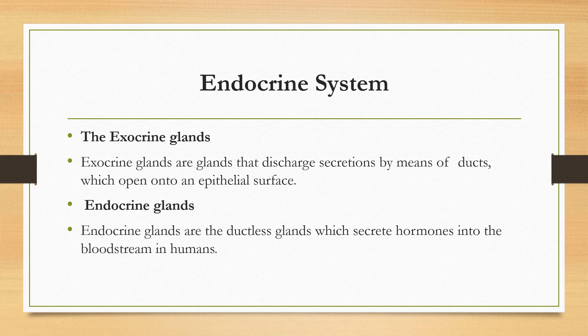Now, the endocrine system. Basically, two types of glands are there. First are the exocrine glands, which pour their secretion by means of ducts. Then endocrine glands are the ductless glands which do not have ducts to pour their secretion. So they secrete hormones and pour them directly into the bloodstream.